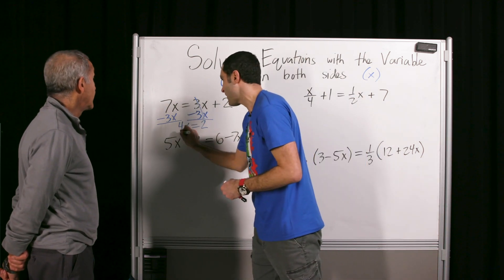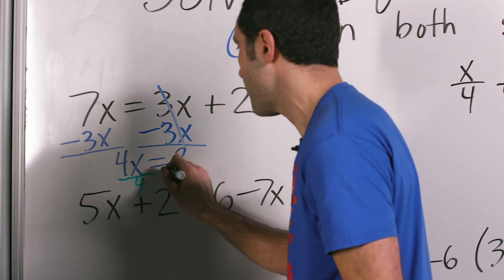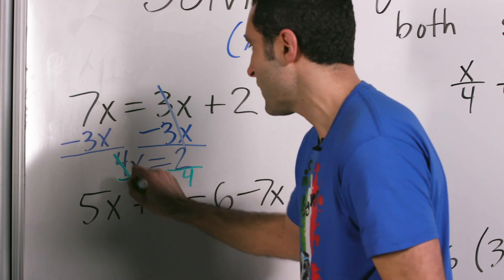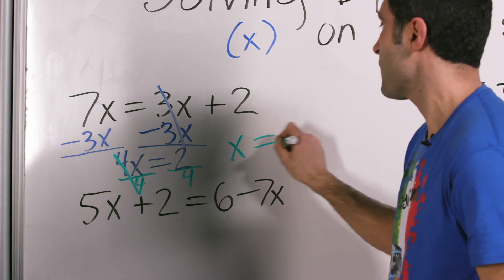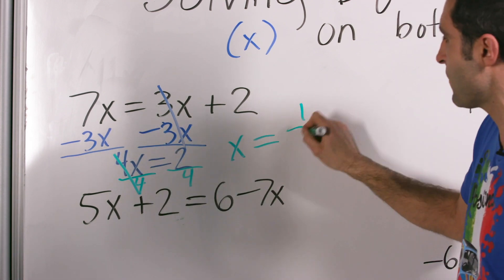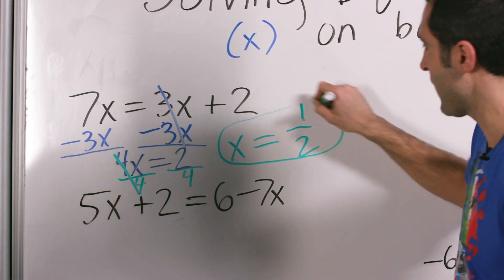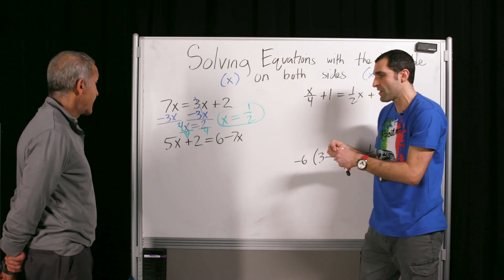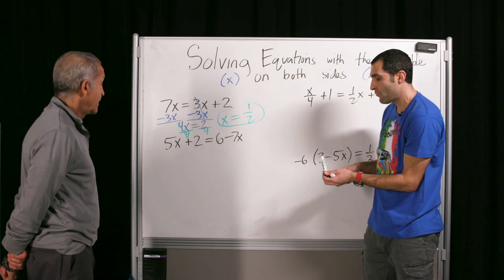If we wanted to divide both sides by four, we can show the proof of that. Divided by four, these cancel. So x equals two over four, which is one half. All right — we're going to bring all the x's to one side, all the numbers that are not x to the other side.